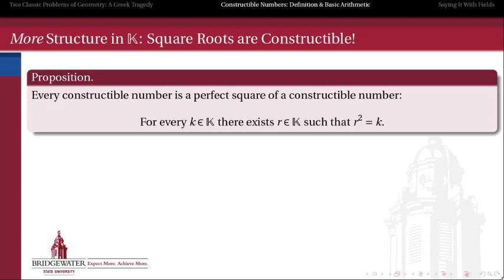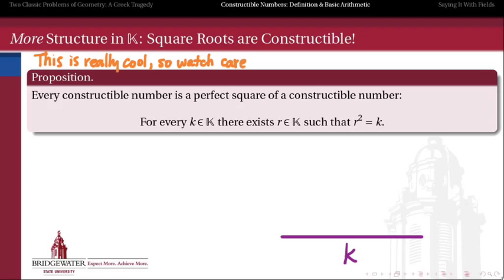There is much more to the structure of constructible numbers than just their field axioms. Addition, subtraction, multiplication, and division are not the end of the story. There's one more feature that the constructible number field has that makes it special — that's the square root property. If I have any constructible number k, I can construct the square root of k. This is a really cool construction that depends on the similar triangles idea that multiplication of constructible numbers depended upon.